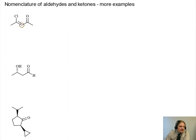In our first example here we have a ketone, but it also has an alkene and a chlorine substituent.